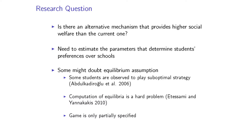In order to do that, we need to estimate the parameters that determine students' preferences over schools. Usually one would impose an equilibrium assumption, but some might doubt that assumption is valid here. There are at least three reasons. Previous papers have documented that students play sub-optimal strategies. Computing equilibrium is a very hard problem from a computation standpoint. And the game students are supposed to play is not even fully specified, so the equilibrium assumption might not be appropriate.